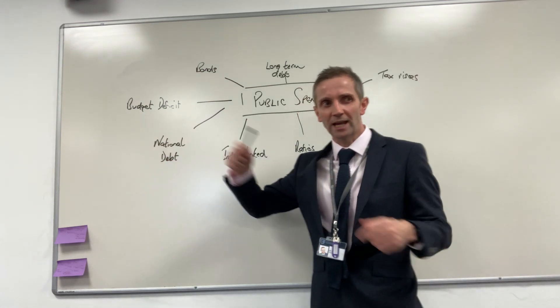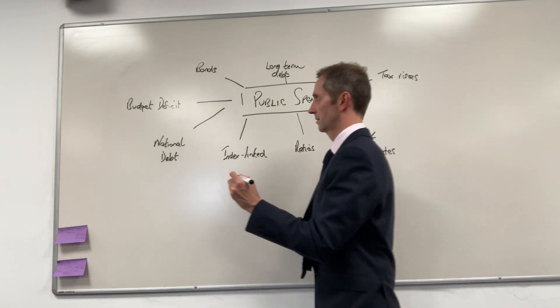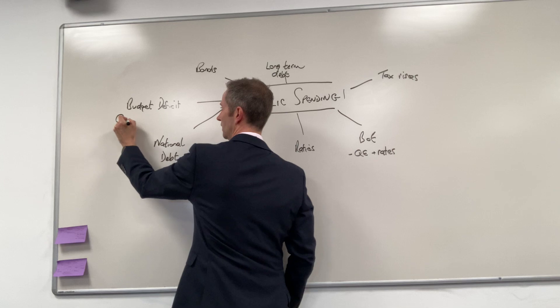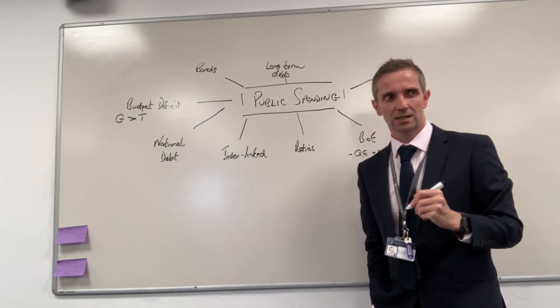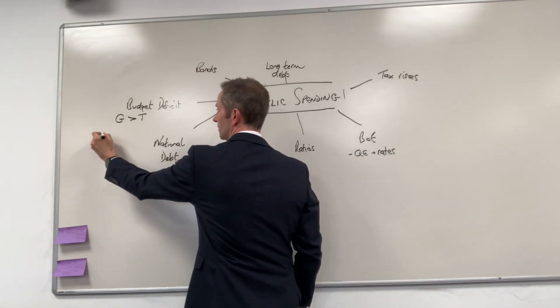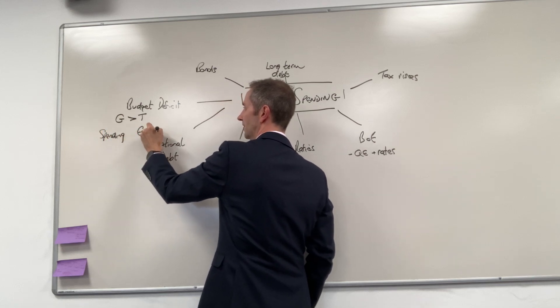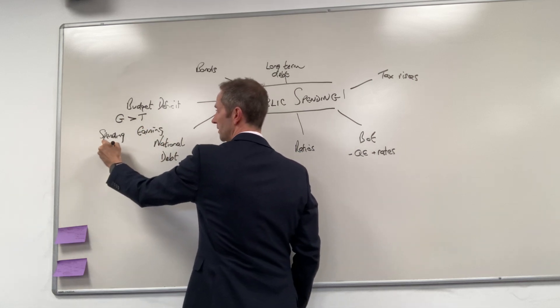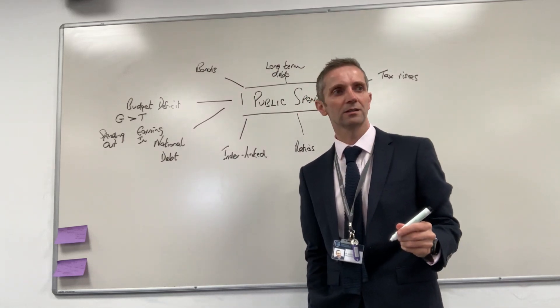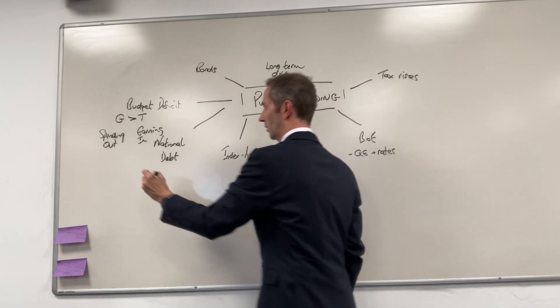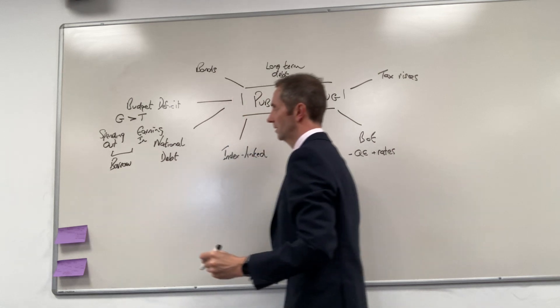Mainly here we'll be talking about a budget deficit, and that means what exactly Nathan? Okay yes, we're talking about the fact that G, government spending, is bigger than T, tax revenue. That means the government is spending more than it's earning or taking in, so money out is bigger than money in. As a consequence, that means that the government has to borrow.